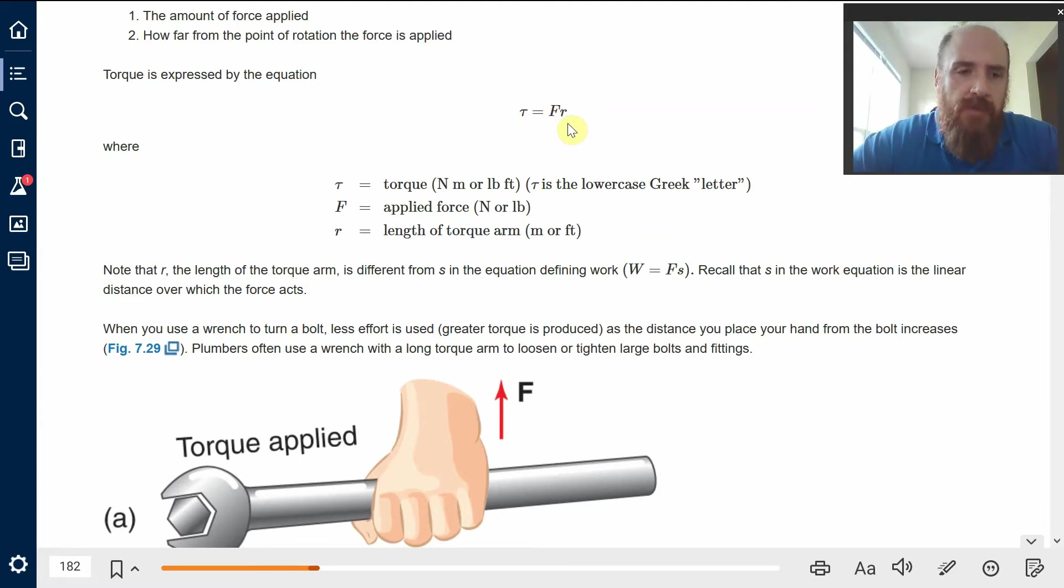A torque arm is sometimes referred to as a lever arm. That is just the distance from the axis, from the center of rotation to where the force is applied. Again, the torque arm is just the distance from the center of rotation to where the force is applied.